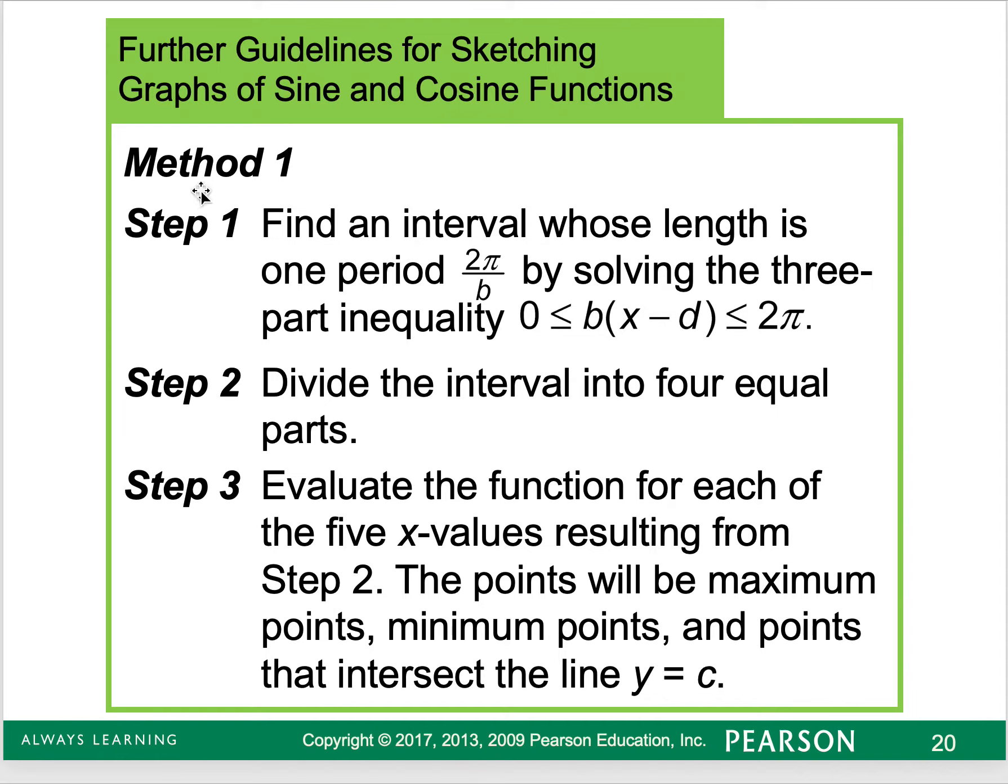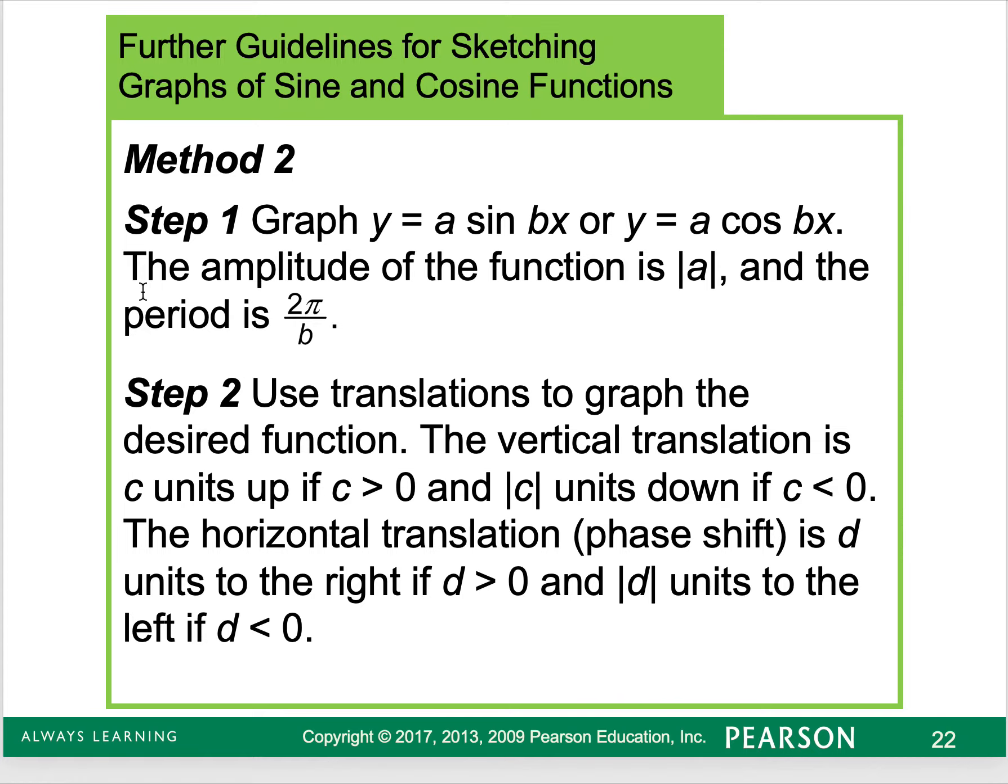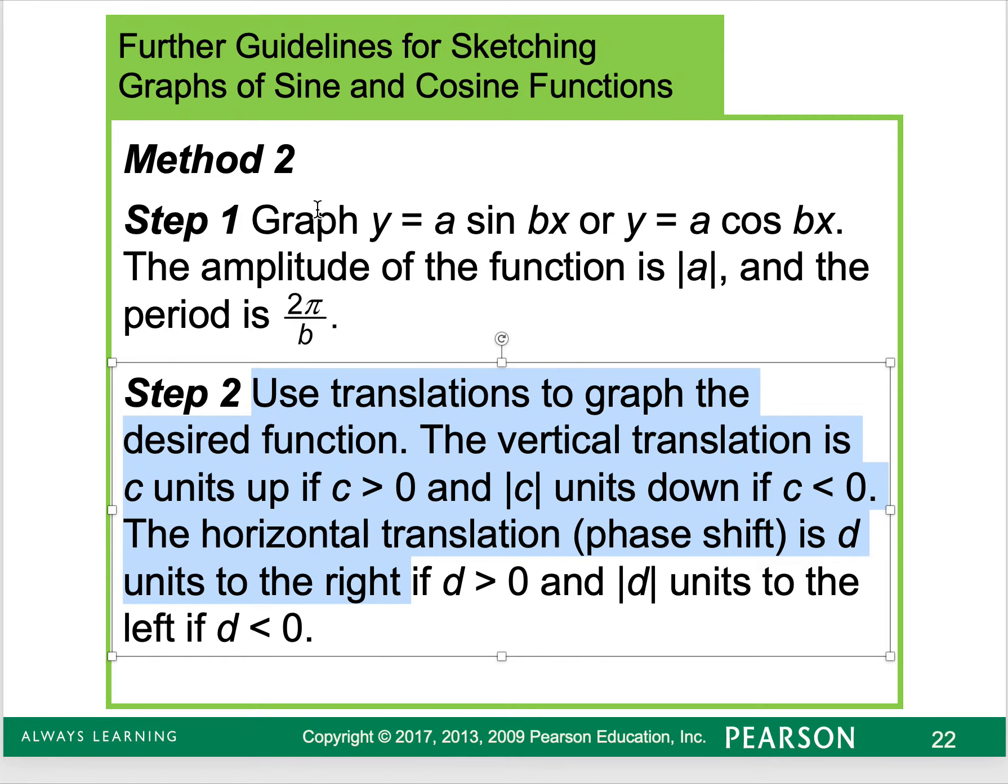So a couple of guidelines here for sketching this. You can first find the interval by using the zero to 2π sandwich method. Then you can divide it into four equal parts to evaluate the function to form the table. And finally, plot the points and add any additional periods as needed. So I'd be like when they say graph two complete periods. Or you can graph it when it's in this form, and then translate it. So this is more what you learned in college algebra. Typically, we graph the absolute value, we graph the parabola, and then we shifted it. So this is more that method. This is where I tend to be really comfortable is with doing this method. But you're going to find what works best for you. And you're going to use that.